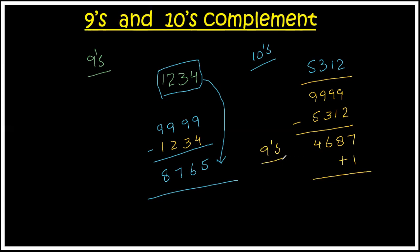We have the 9's complement here. Now we add 1 to this and get 4688. This is the 10's complement for this decimal number.